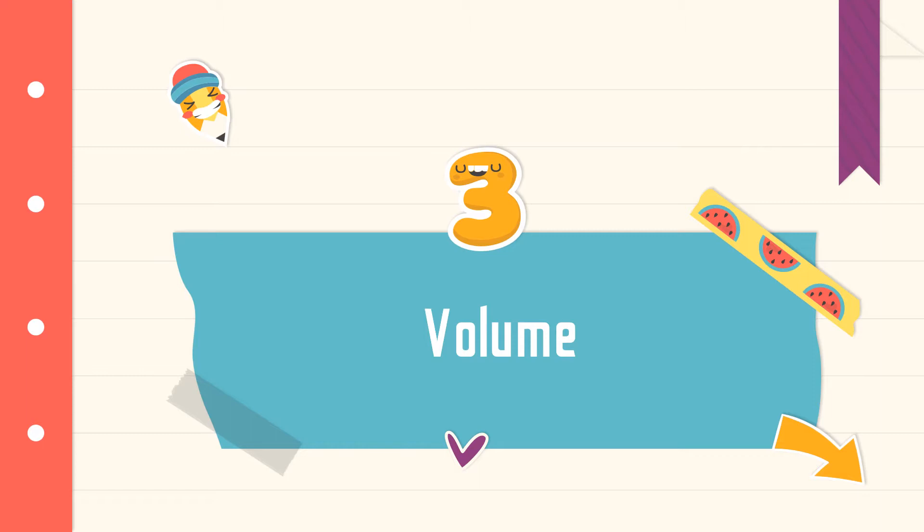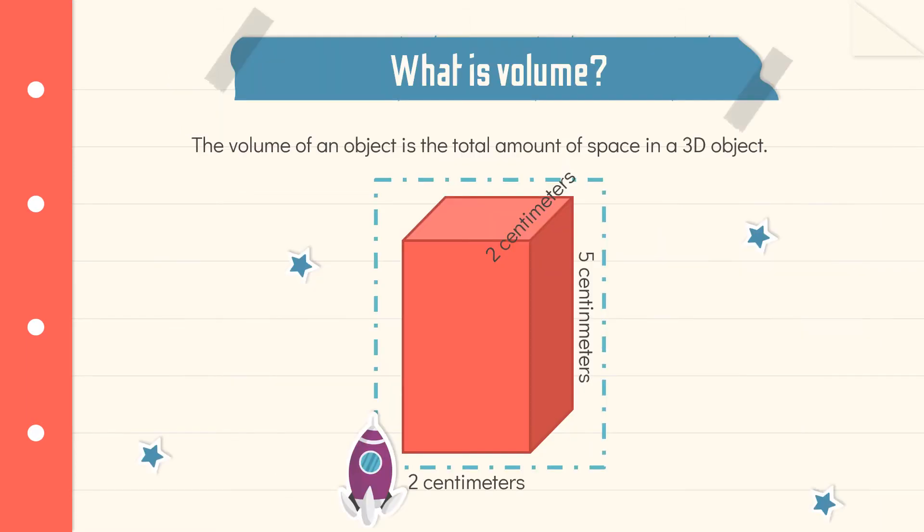So let's take a look. Volume is the total amount of space in a 3D object. So when we were talking about liquids, we were saying how much liquid is in a container, and that is called volume. So now when we're talking about 3D shapes, the total amount of space inside a 3D object, that is volume. And we're going to be working with calculations. So let's get practicing.